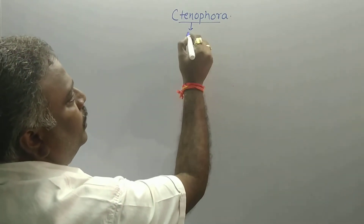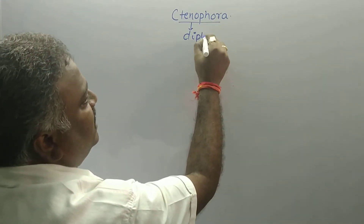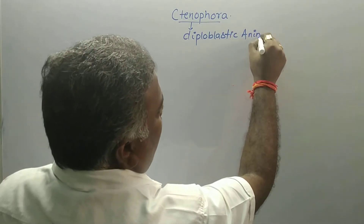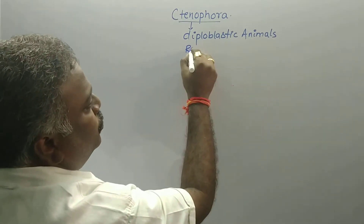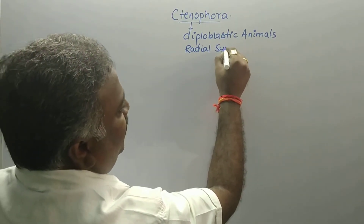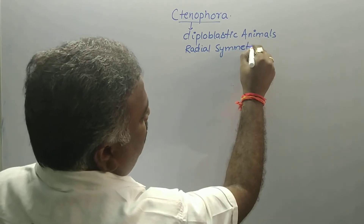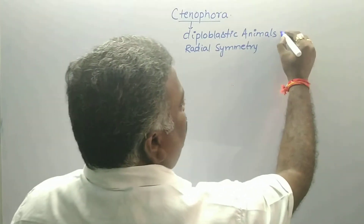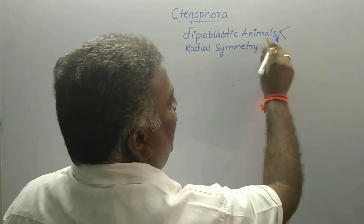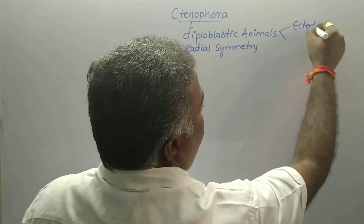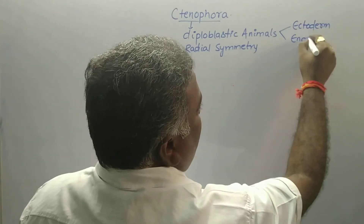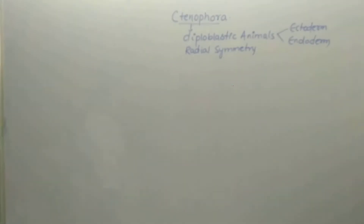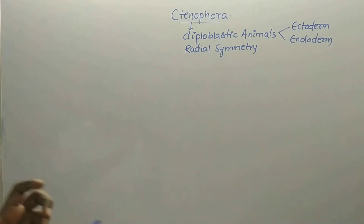Ctenophores are called diploblastic animals because they contain two embryonic germ layers — ectoderm and endoderm. Animals having both ectoderm and endoderm are called diploblastic animals. They display radial symmetry.